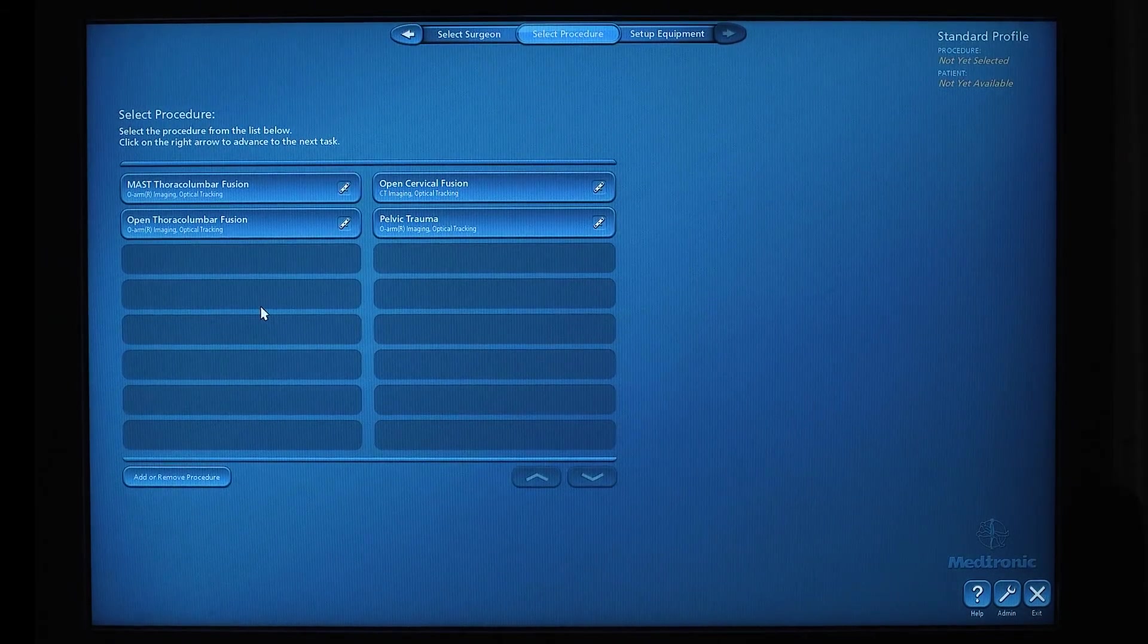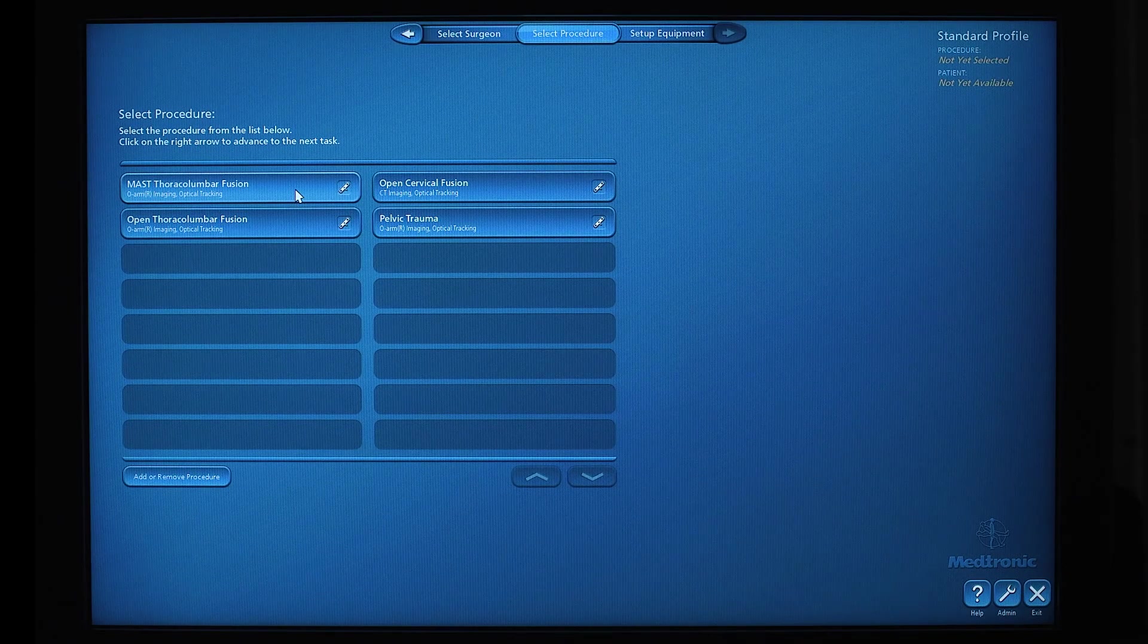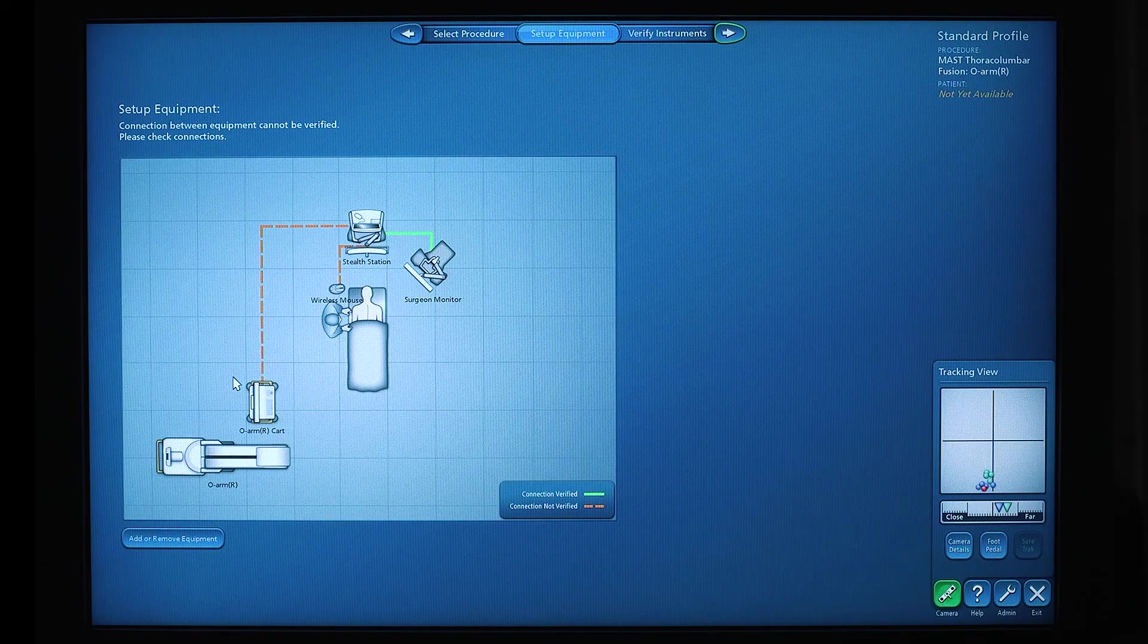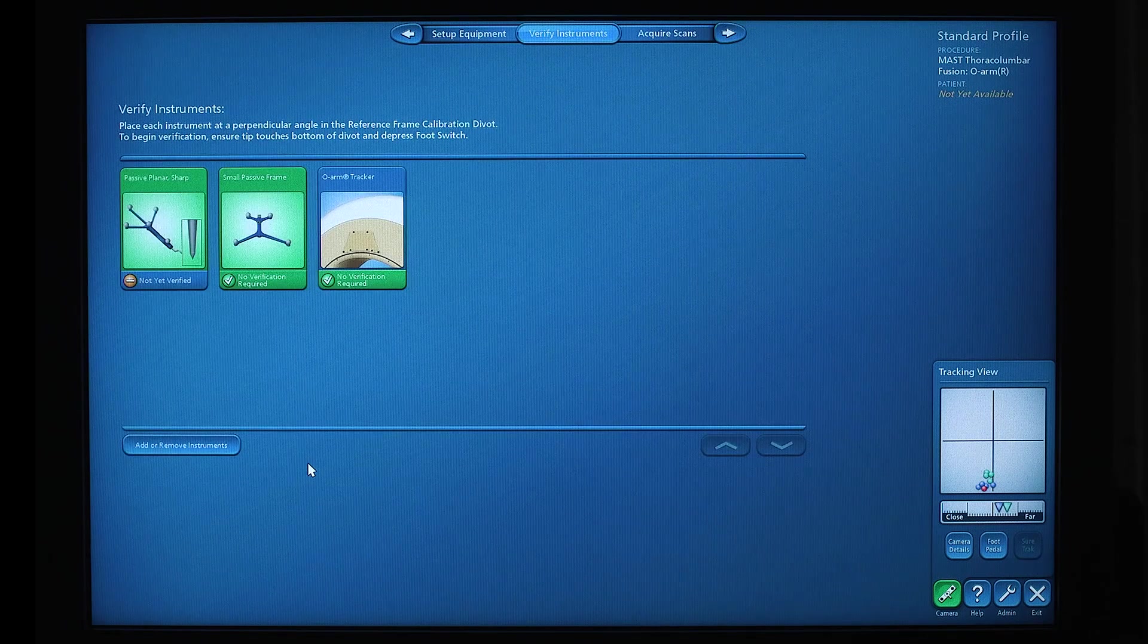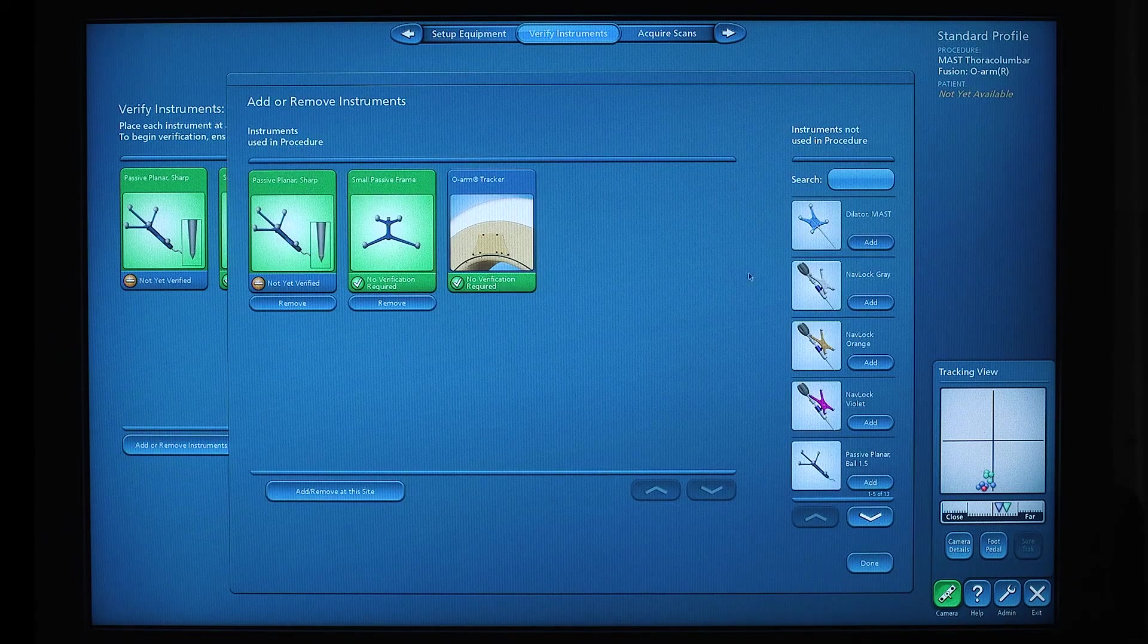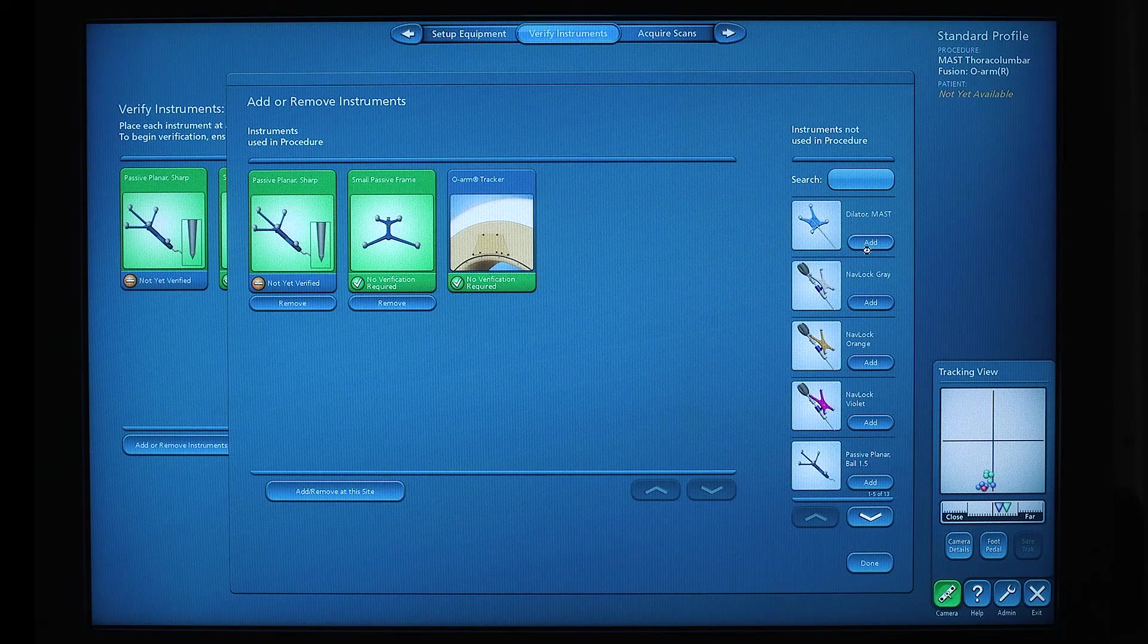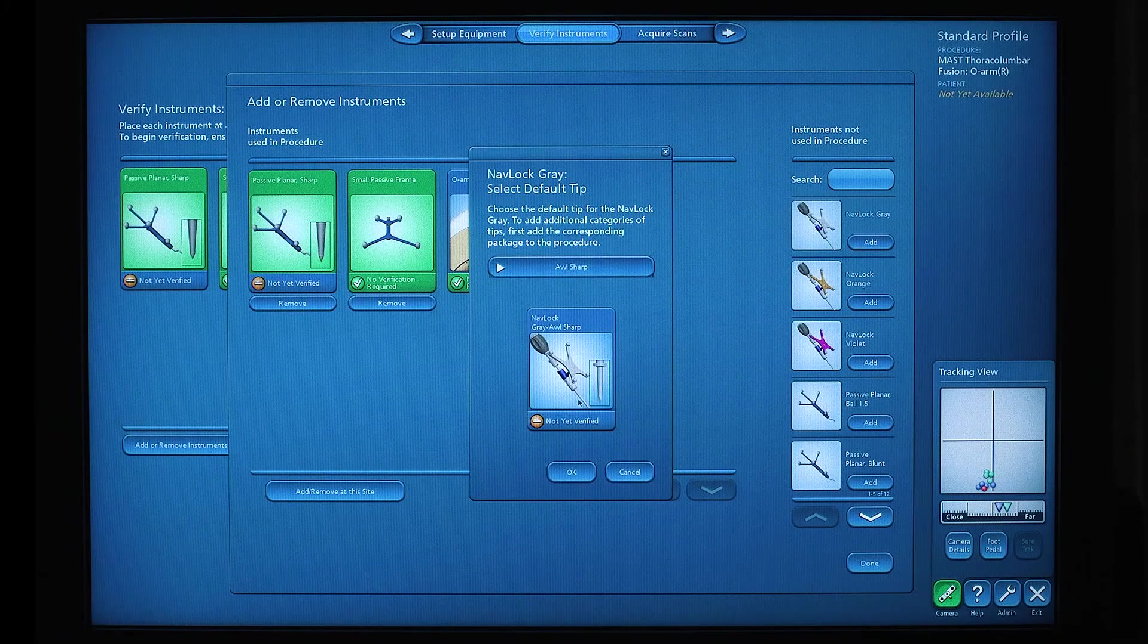From here, we'll select randomly o-arm imaging with optical tracking. Again, double click. From this point, the system will expect to see the o-arm. In this instance, we already have a preloaded exam, and we'll follow through with that. We need to make sure that we add all the necessary instrumentation. You can add or remove instruments by using this tool card. For this, we're going to include the mass dilator, three nav locks, in this case, the sharp awl.